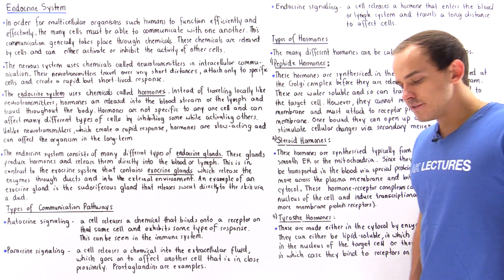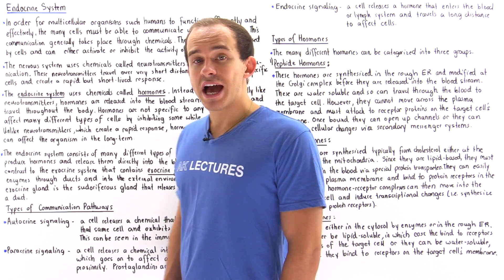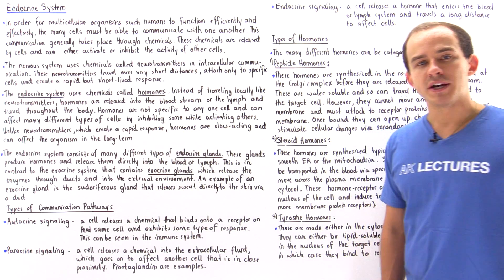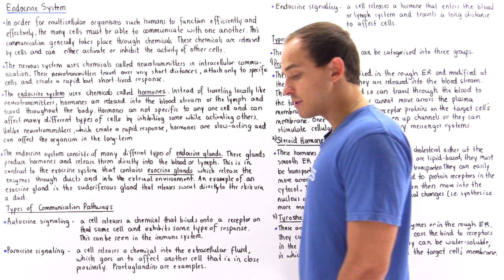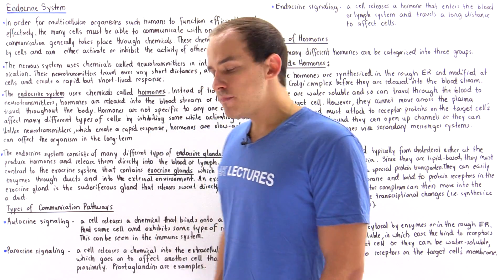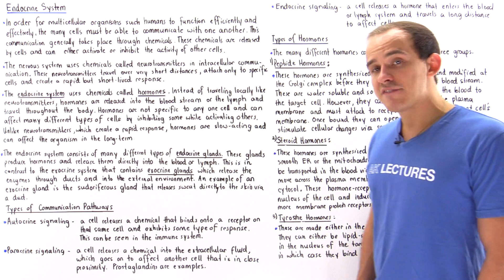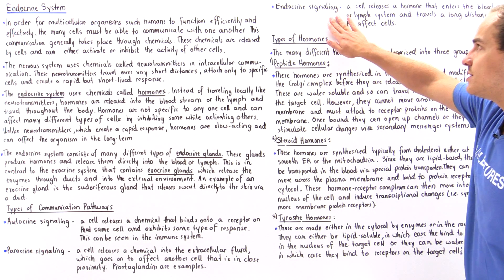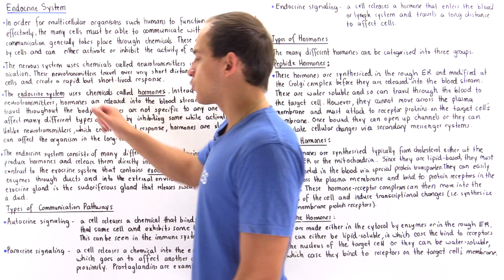Before we discuss the different types of hormones produced by the endocrine glands, let's discuss the three ways by which our cells can communicate with one another using chemicals. We have an autocrine signaling pathway, a paracrine signaling pathway, and the endocrine signaling pathway that is used by the endocrine system.